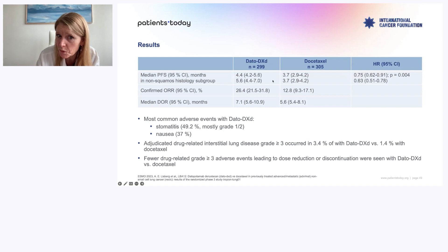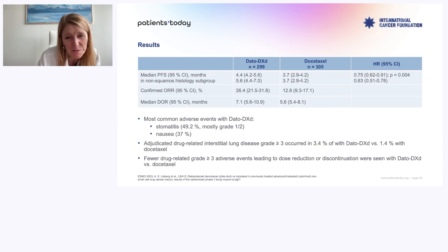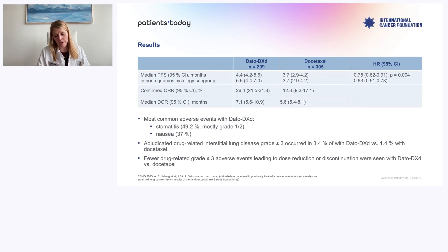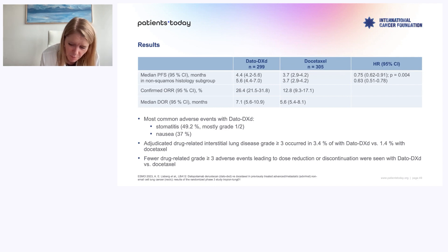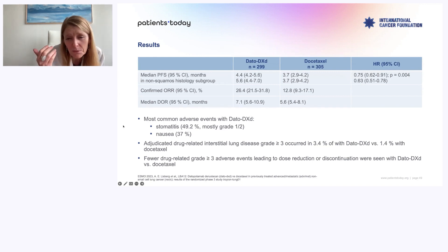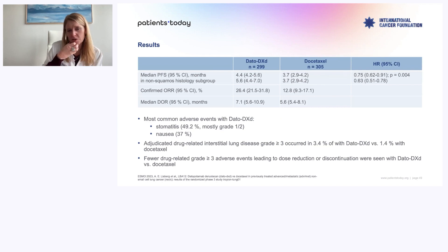The response rate is doubled with datopotamab deruxtecan from 13% to 26% — significant because sometimes response is about relief of symptoms, and the duration of response was also prolonged. The price to pay: docetaxel already has high toxicity so it's difficult to compete. The toxicity for DATO-DXD includes fatigue, nausea, but most importantly stomatitis — not just inflammation of the tongue but inflammation taking the tongue, esophagus, and stomach, really affecting the way you can swallow and digest. Some patients lose weight.